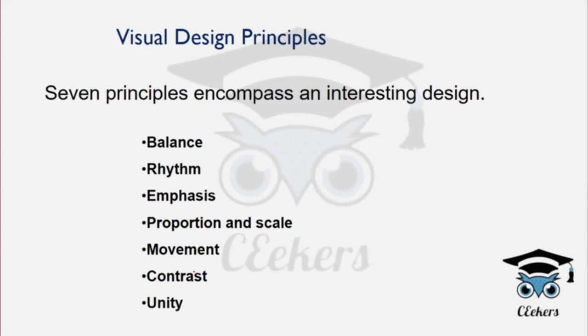Visual design principles in architecture include: balance, rhythm, emphasis, proportional scale, movement, and contrast. These are the main principles in architecture design.